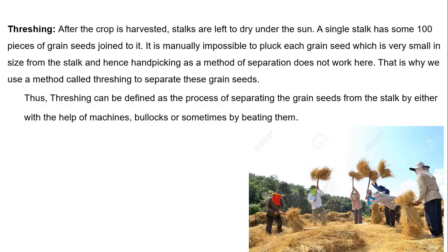Next is threshing. After the crop is harvested, stalks are left with many grains and these are dried under the sun. A single stalk has some hundreds of grain seeds joined to it. So it is impossible to pluck each grain seed with the help of our hand — meaning we cannot use the handpicking method to separate the grain from the stalk. That is why we use a different method called threshing.